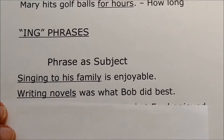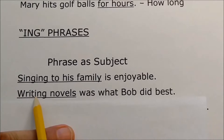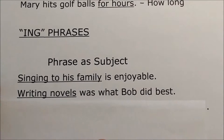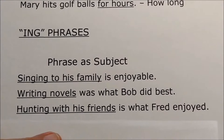Writing novels was what Bob did best. Again, we have I-N-G on the end of the verb. Writing novels becomes a phrase acting as a subject — it's a phrase functioning as a subject. What Bob did best is a subject equivalent referring back to writing novels. Hunting with his friends is what Fred enjoyed. Again, hunting with his friends — the whole group of words is a phrase and it is the subject.